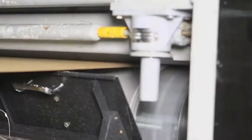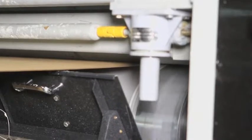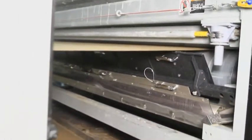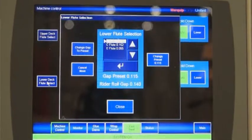The industry has long recognized the value of the rata roll in glue machine applications. Rata rolls precisely apply starch to each flute tip as single face passes through the glue roll rata roll nip.